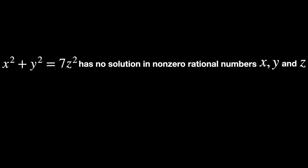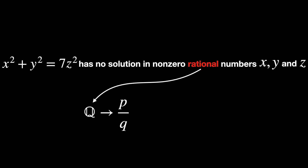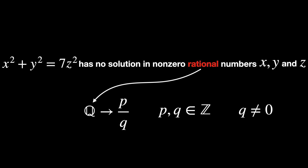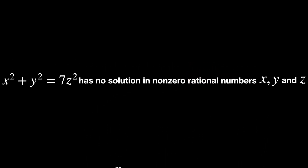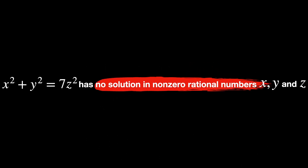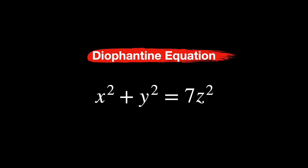Rational numbers meaning numbers of the form p over q, where p and q are integers with q not zero. So there are no sets of non-zero rational numbers that make x squared plus y squared equals 7z squared true. The equation is a Diophantine equation, a type of equation where we seek integer or rational solutions. If no such rational solutions exist, the equation is unsolvable in rational numbers.